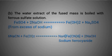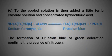Step B: the water extract of the fused mass is boiled with ferrous sulfate solution. Ferrous sulfate reacts with 2 sodium hydroxide to give ferrous hydroxide plus sodium sulfate. Additionally, 6 sodium cyanide plus ferrous iodide react to give sodium ferrous cyanide plus sodium hydroxide.